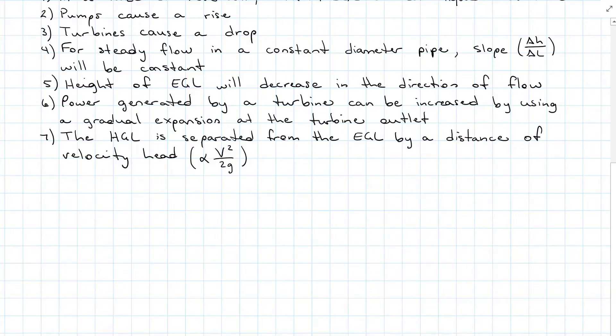The hydraulic grade line is separated from the energy grade line by a distance of velocity head, which is v squared over 2g. When a pipe discharges into the atmosphere, the hydraulic grade line is aligned with the system, so that would be the center line of the pipe.